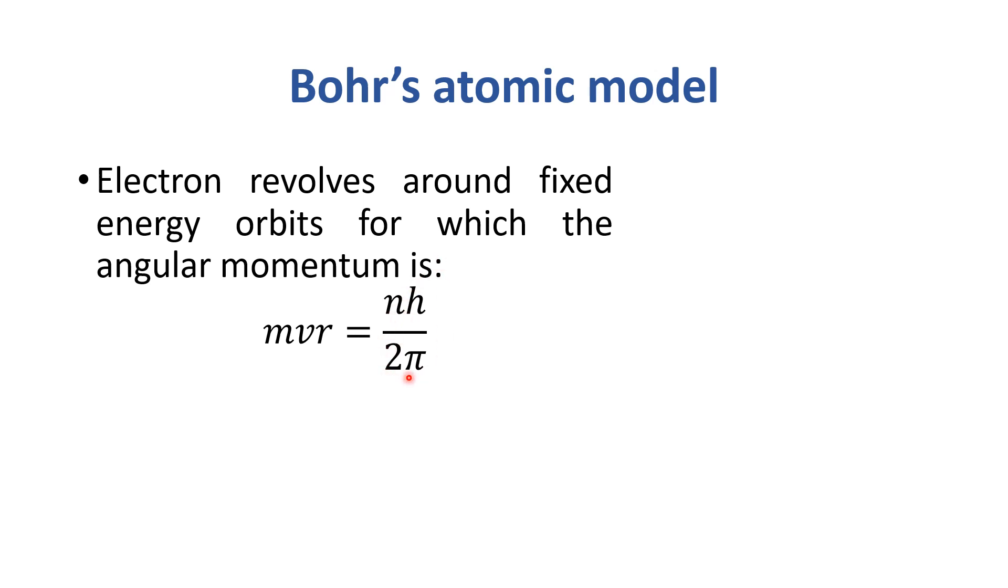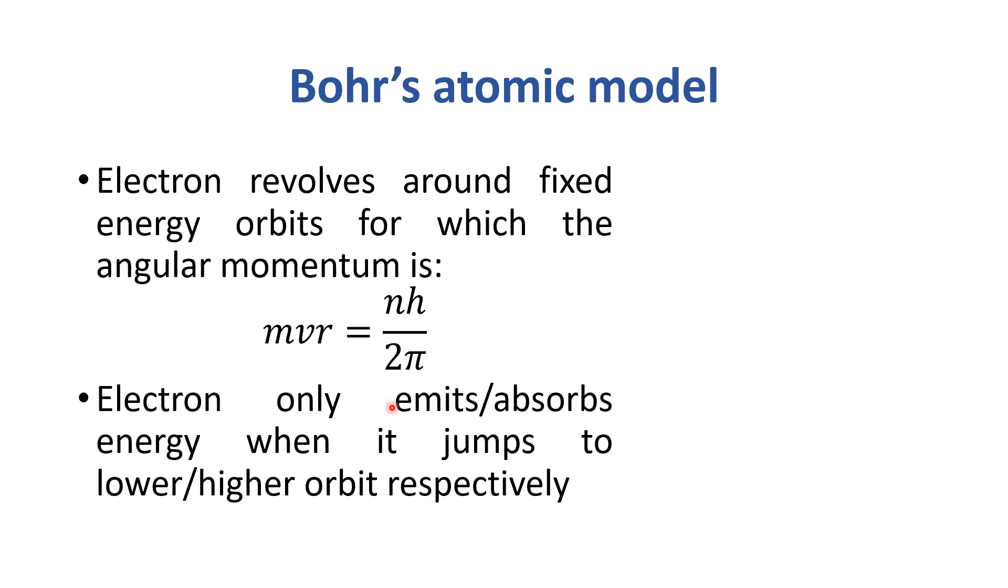So h over 2π, which is constant, it is the integral multiple to the energy level. Then, electron only emits or absorbs energy when it jumps from lower or higher orbit respectively. And it is valid only for unielectron models. So these atoms, which have only one electron, they totally follow the Bohr's atomic model.